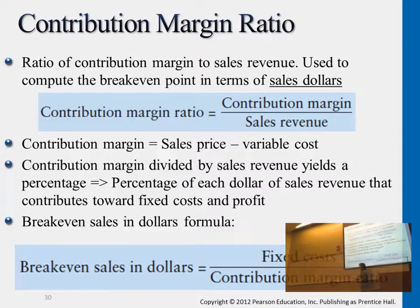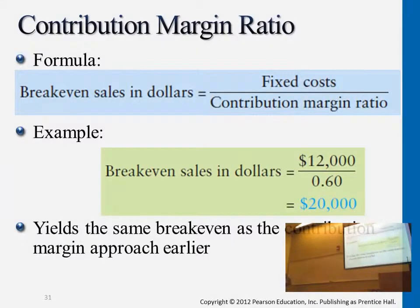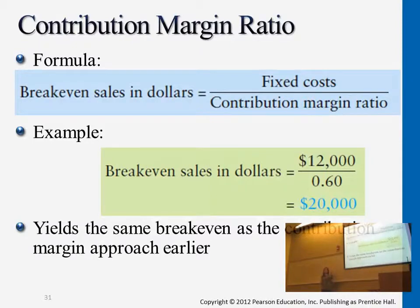So this is not in units, this is directly the sales dollar value. Fixed cost divided by contribution margin ratio — the ratio being per dollar of sales how much contribution margin we're generating, which is 0.6. We use the 0.6 to divide fixed cost, and we want to know how many dollars we need as sales revenue in order to cover the $12,000.